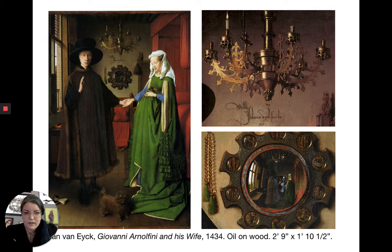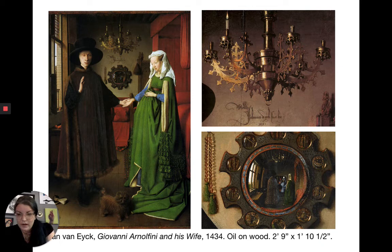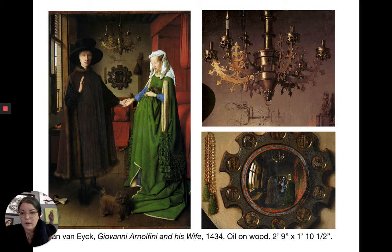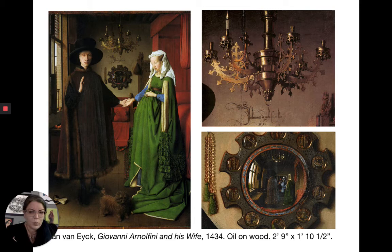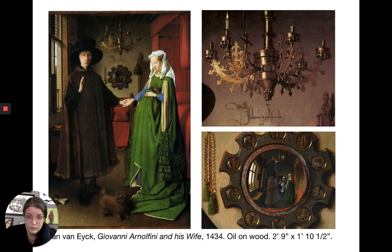What we do know is that the artist serves as a witness. Under the chandelier, his signature on the wall reads 'Johannes de Eyck fuit hic' — 'Jan van Eyck was here.' He's not just signing as painter but as witness to whatever is happening — possibly a marriage, or a ceremony allowing the wife to conduct business in his absence. Whatever the occasion, the artist serves as more than an artist, which was typical of his portraiture and helped establish portraiture as an important art form in the Northern Renaissance.